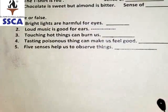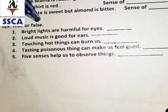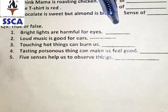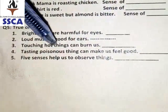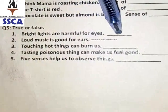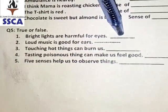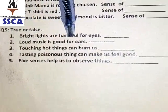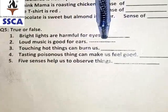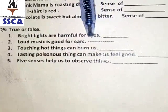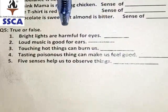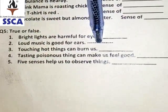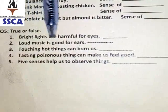Question number 5 is true or false. First: Bright lights are harmful for eyes — can bright lights damage our eyes? Write true or false in this blank. Second: Loud music is good for ears — is this true or false? If this is right, write true; but if it is wrong, write false in this blank.